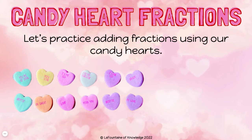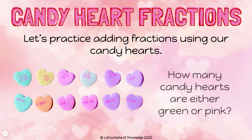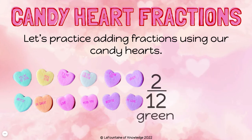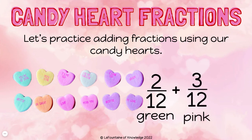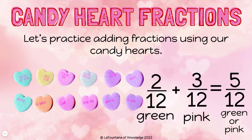Let's practice adding fractions using our candy hearts. How many candy hearts are either green or pink? To answer this question, I need to add the green and the pink fractions together. I have two twelfths green and three twelfths pink. Two twelfths plus three twelfths is five twelfths, so five twelfths of my candy hearts are either green or pink.